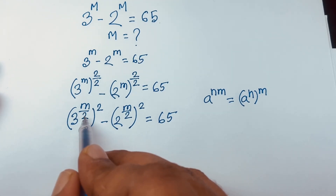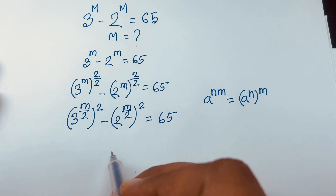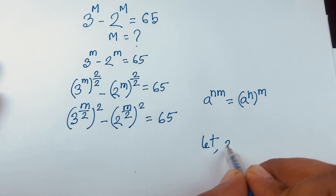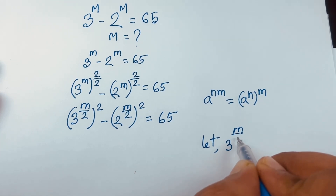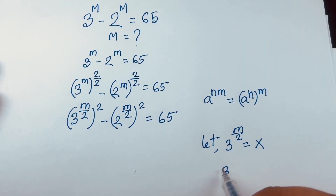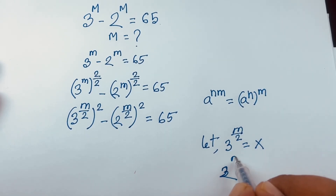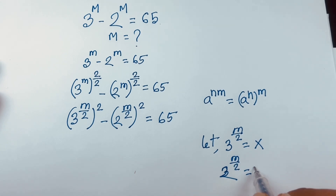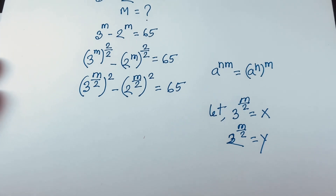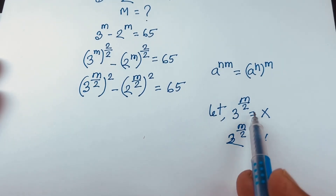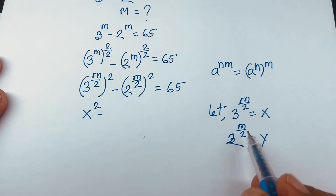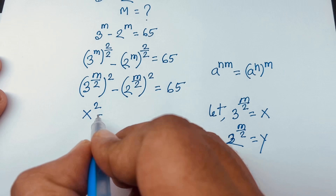Here we have 3^(m/2) and 2^(m/2). Let 3^(m/2) be equal to X, and 2^(m/2) be equal to Y. So at this moment, 3^(m/2) becomes X², and 2^(m/2) becomes Y².